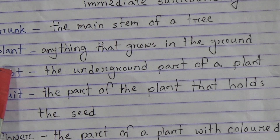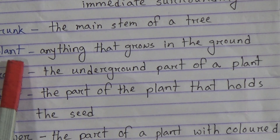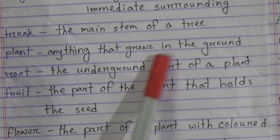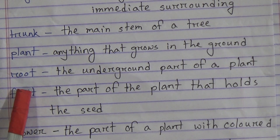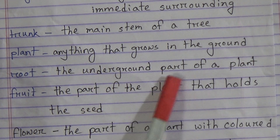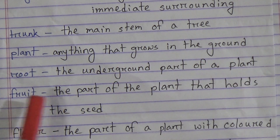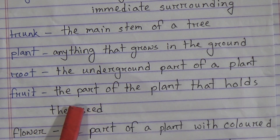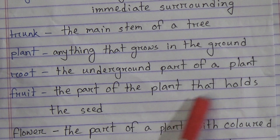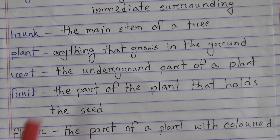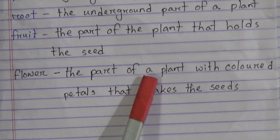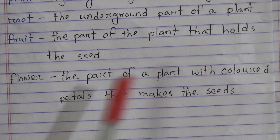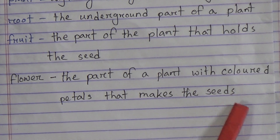Now, what meaning? Plant. Plant means anything that grows in the ground. Now, root. Root means the underground part of a plant. Now, fruit. Fruit means the part of the plant that holds the seed. The last word meaning is flower. Flower means the part of a plant with colored petals that makes the seeds.